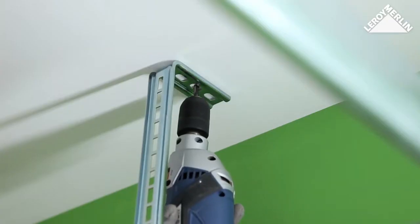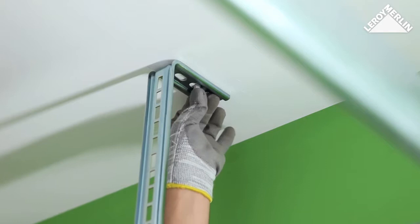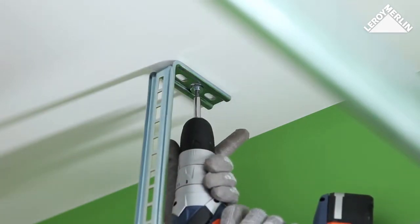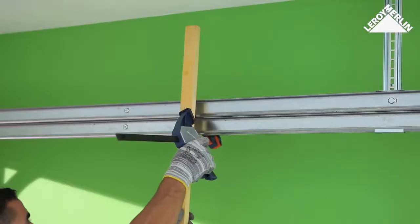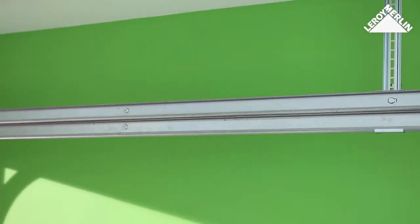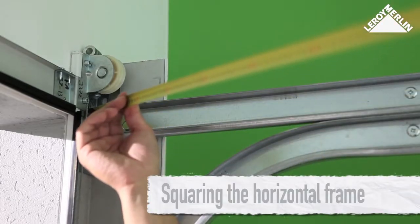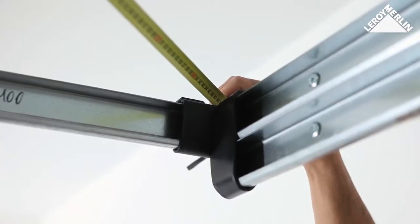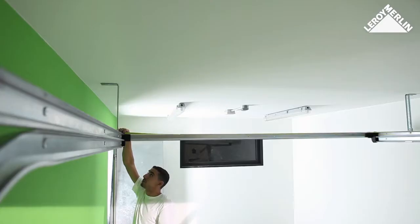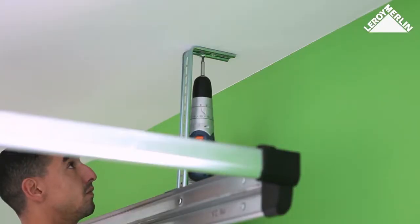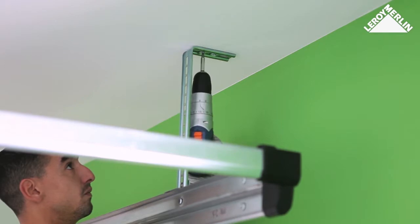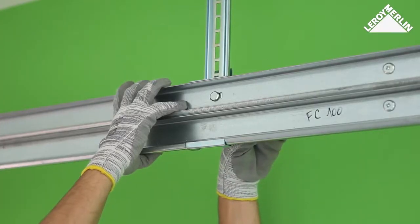Drill, insert wall plugs and fit the brackets into the ceiling using only the center screws for the moment. Do not fully tighten the screws. You can now remove the supporting battens. Squaring the horizontal frame: Ensure the horizontal frame is perfectly square as well as level. Place an extra screw into each right angle bracket and tighten. Tighten the rail brackets as well.